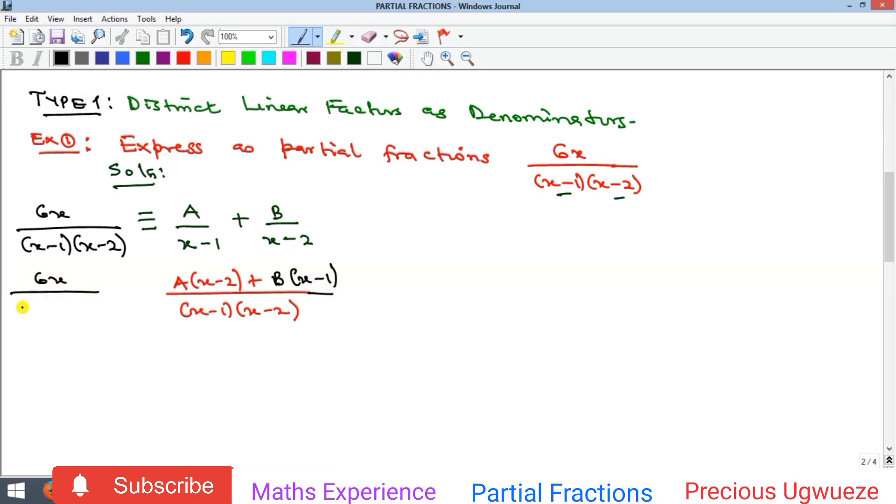If they are equivalent, then their denominators can go away. When that happens, you have 6x equivalent to A(x minus 2) plus B(x minus 1). This gives us equivalent polynomials, which we covered in our previous video.